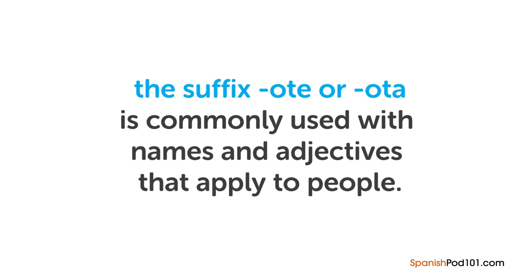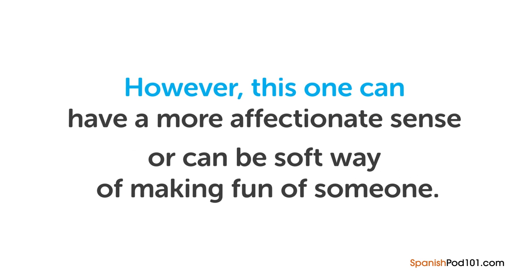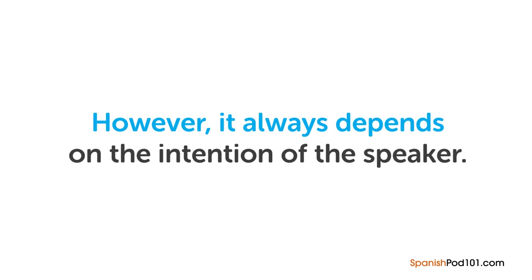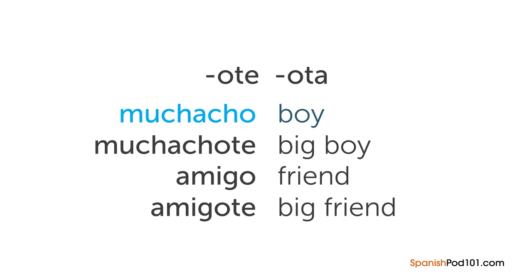Lastly, the suffix -ote or -ota is commonly used with names and adjectives that apply to people, and also for making things seem bigger. It can have an affectionate sense or be a soft way of making fun of someone — it always depends on the intention of the speaker. From 'muchacho' meaning boy, we get 'muchachote' literally meaning big boy. And with 'amigo' meaning friend, we get 'amigote,' which could be used by your father in a kind way or as a joke.